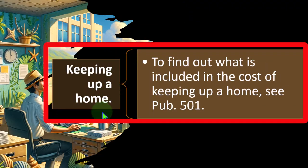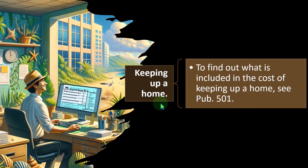We've seen 'keeping up a home' in the tax code — what does it mean? That would be part of the qualifications for claiming head of household, for example. To find out what is included in the cost of keeping up a home, see Publication 501. If you're unsure whether you've paid enough to qualify, you can go through those calculations in Publication 501 in more detail.